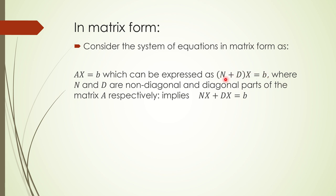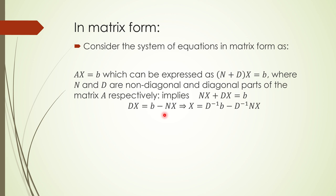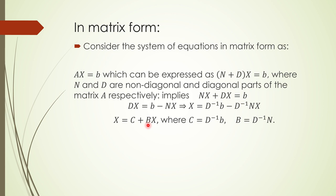We apply the distributive law to get Nx + Dx = b. Rearranging, we get Dx = b − Nx, which implies x = D⁻¹b − D⁻¹Nx. We then replace D⁻¹b with c and D⁻¹N with another matrix B. This matrix B is known as the iteration matrix.